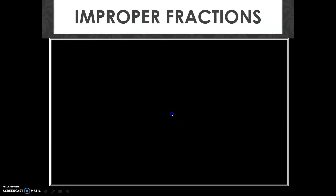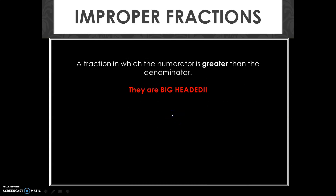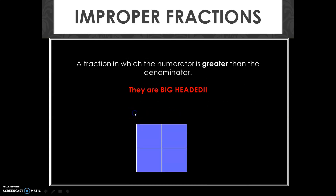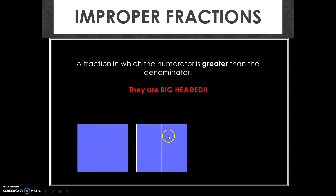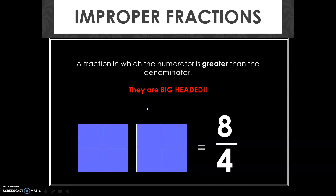Improper fractions: a fraction in which the numerator is greater than the denominator — they are big-headed. You can see two squares where all parts are shaded. Eight parts are shaded, and each square has only four pieces, so we write it as eight upon four, or eight over four, or eight divided by four.